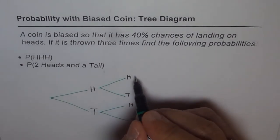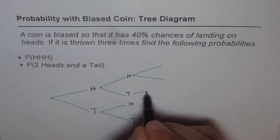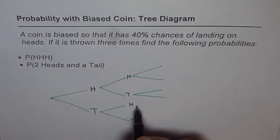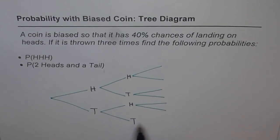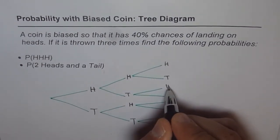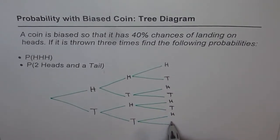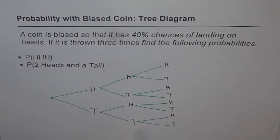Each branch continues — you again get head or tail at every level. At this stage I would like you to stop the video, answer the question, and then check the answer. Now we will fill it up. This is the tree diagram, and now we will make it a probability tree diagram by filling in the probabilities on each branch.